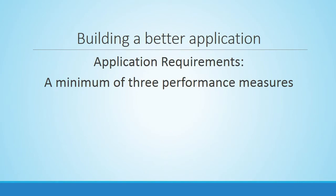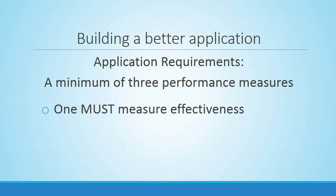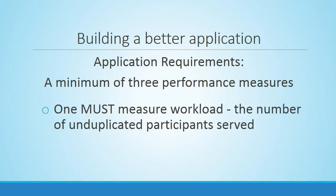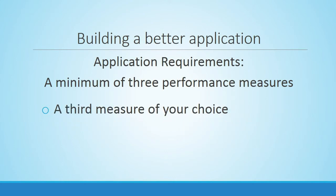Now let's look at the specific requirements in the City's application process. The section on performance requires that you provide at least three performance measures. One of these, first and foremost, must measure effectiveness — you must attempt to measure what your program intends to accomplish. For example, if your organization is providing health care, you may want to report on successful treatments rather than just the number of clients seen. A second measure must be a workload measure — specifically the number of unduplicated participants served. You must include at least one more measure of your choosing — another effectiveness measure, another workload measure, or an efficiency measure — to reach the minimum of three.